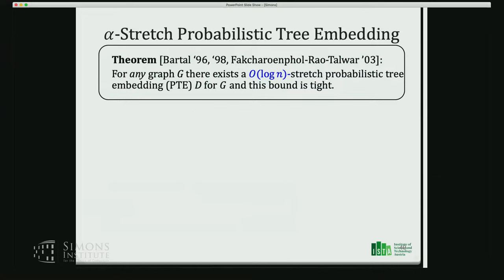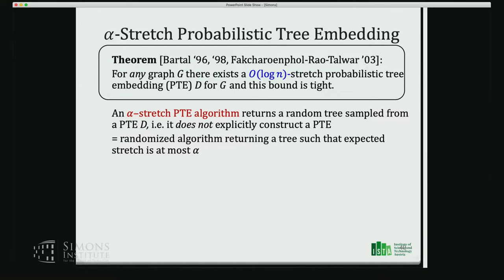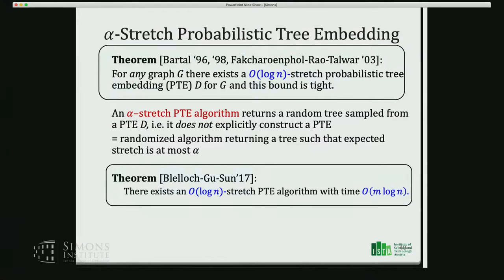As a small lemma, Karp showed in 1989 that there exists a 2-stretch probabilistic tree embedding for the N-cycle — fitting to mention this in a Karp lecture. Subsequently, a sequence of work showed that for every graph there exists an O(log N)-stretch probabilistic tree embedding, and this bound is tight. Blelloch, Gu, and Sun showed this can be achieved with running time m log N. A probabilistic tree embedding algorithm is a randomized algorithm that returns a sampled tree with expected stretch at most alpha.